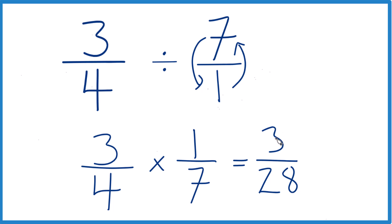We can't simplify that any further. So three-fourths divided by seven, or you could call it three-fourths times one-seventh, that equals three-twenty-eighths. Thanks for watching.